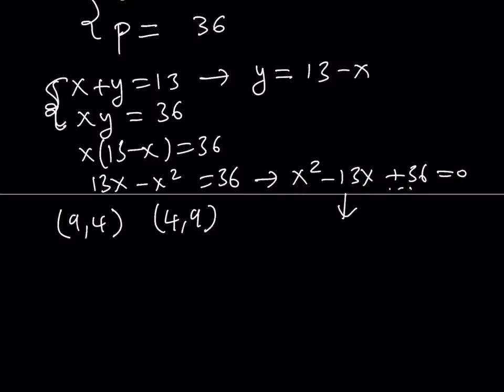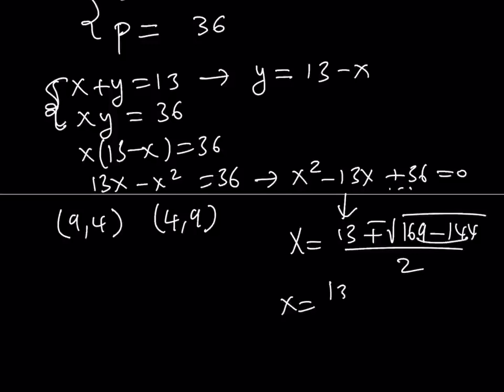x equals negative b plus minus the square root of b squared, which is 169, minus 4ac, which is 144, divided by 2. And from here, this gives us 25. The square root of 25 is equal to 5. And from here, we get 13 plus 5 divided by 2, and 13 minus 5 divided by 2. As you know, this is equal to 9, and that is equal to 4. So we get the same answer no matter what.